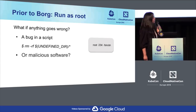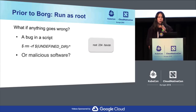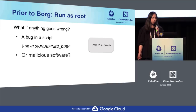What if anything goes wrong in this model? For example, a bug in a script running an rm command where a variable is undefined could remove everything on the system. Or a vulnerability or malicious software could access /bin and change programs there, mess up files under /etc, or make the node unbootable.